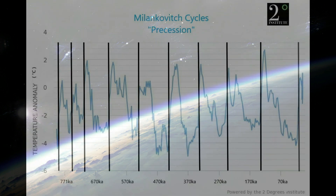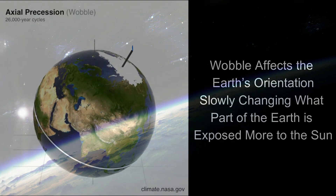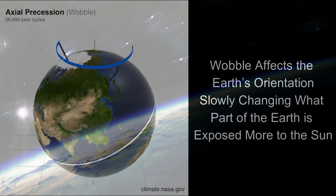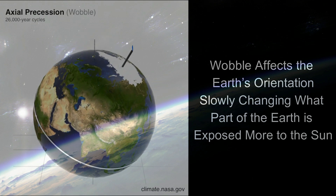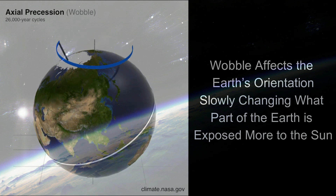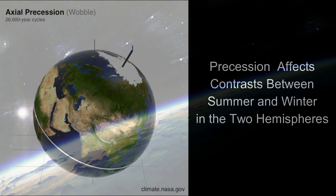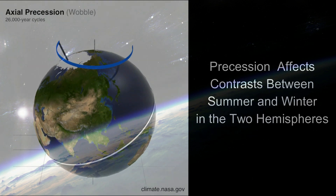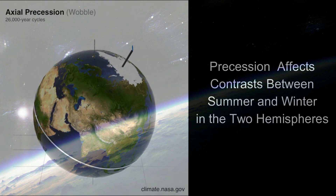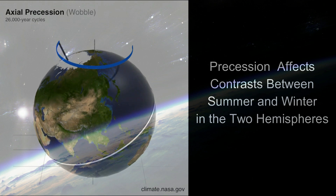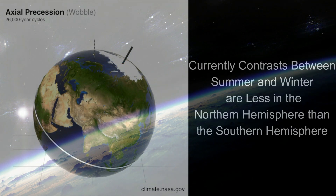Precession is the third factor in the Milankovitch cycles. Precession is wobble. Wobble affects the Earth's orientation, slowly changing what part of the Earth is exposed more to the Sun. It affects the contrast between summer and winter in the two hemispheres. Currently, contrasts between summer and winter are less in the Northern Hemisphere than in the Southern Hemisphere.